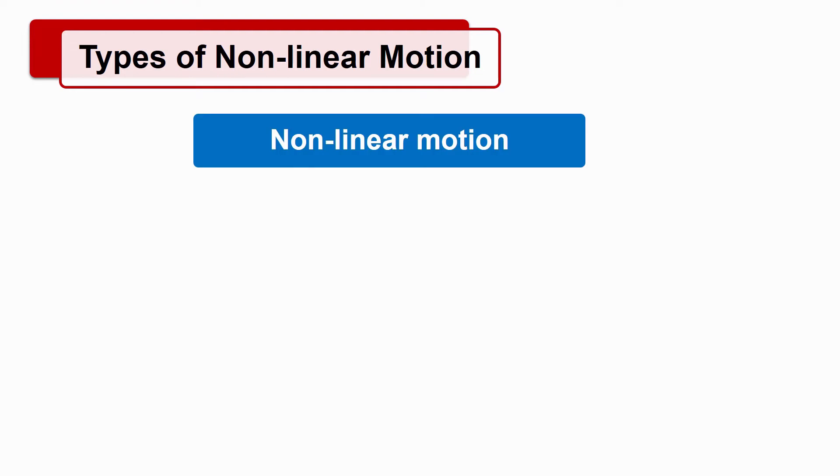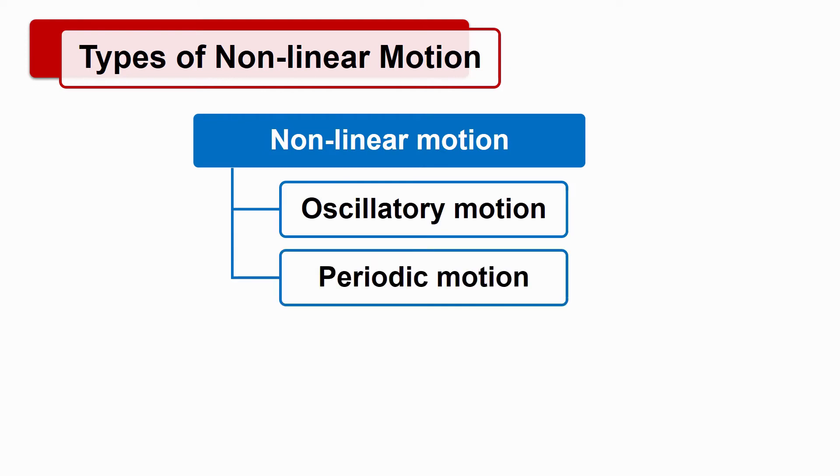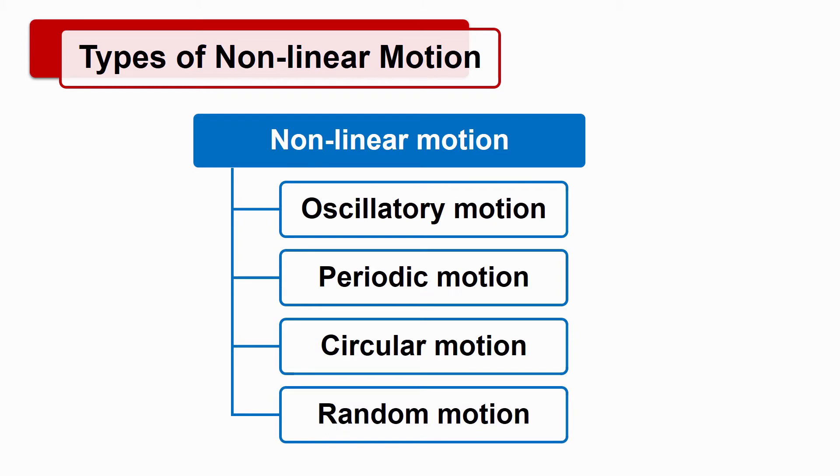Types of Non-linear Motion. There are four types of non-linear motion that are oscillatory motion, periodic motion, circular motion, and random motion. Let's study these types of motion.